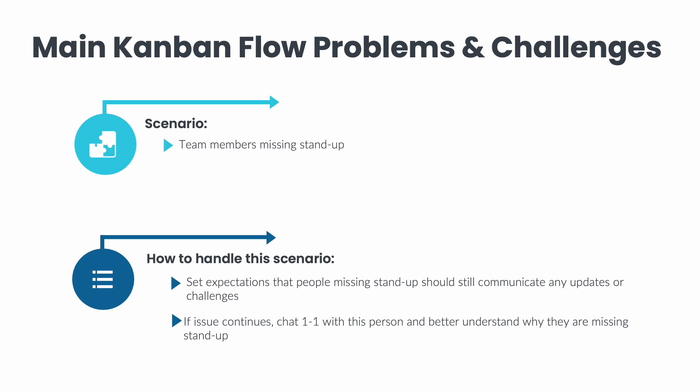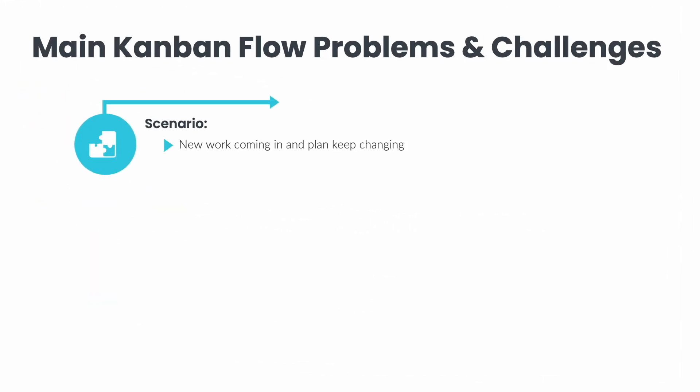In the case they don't have a good reason and are skipping stand-up because they just don't think they need to show up, you might want to chat about this issue with management, especially if stand-up is a common and expected practice in your team. Another challenge could be new work coming in and the plan keeps changing — meaning work your team is already working on and work that has been defined and prioritized in your ready column is no longer relevant due to some big change in your organization.